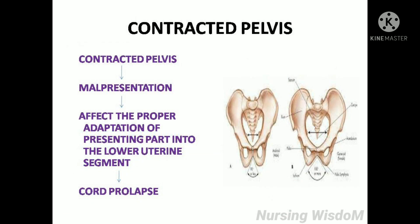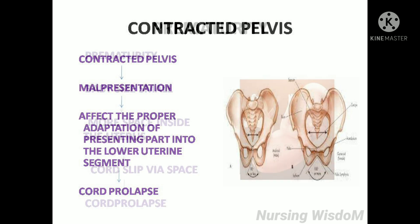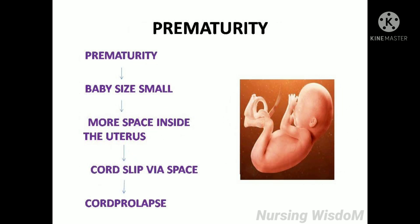In contracted pelvis, there is more chance of malpresentation, which will affect the proper adaptation of the presenting part into the lower uterine segment, causing cord slippage and leading to cord prolapse. In prematurity, the baby size will be small, so more space inside the uterus will be available. The cord can slip via that space and leads to cord prolapse.